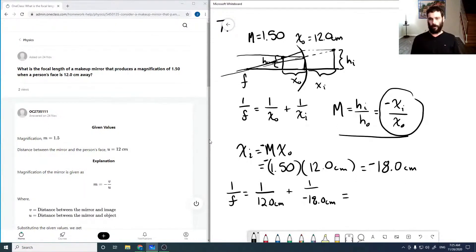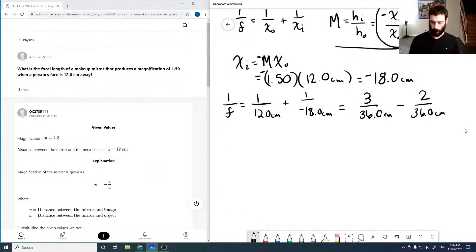Which, giving them the same denominator, is 3 over 36 centimeters minus 2 over 36 centimeters. So 3 minus 2 is 1, so that's pretty easy. And so that's equal to 1 over 36 centimeters. As that's 1 over f, our focal length is 36.0 centimeters.